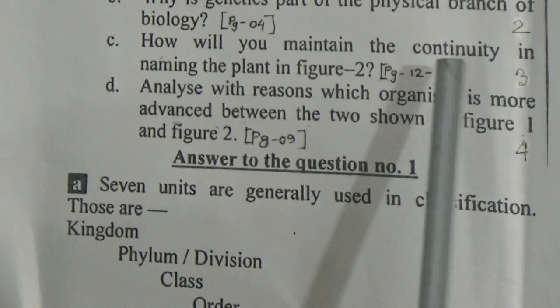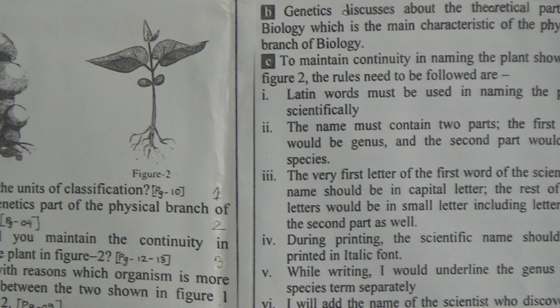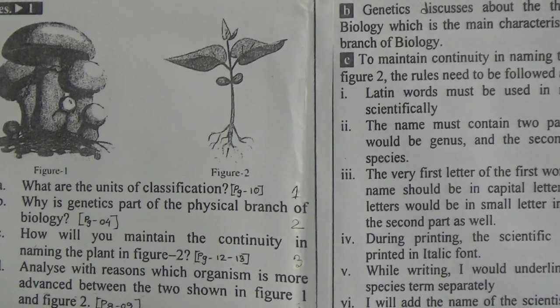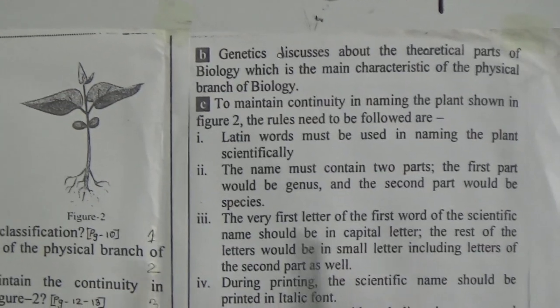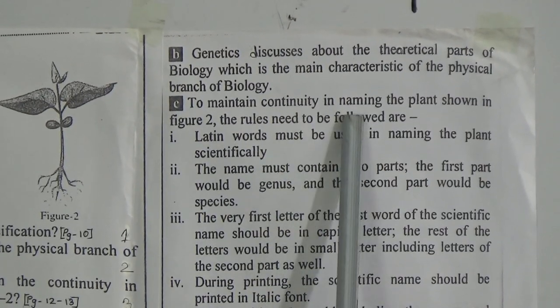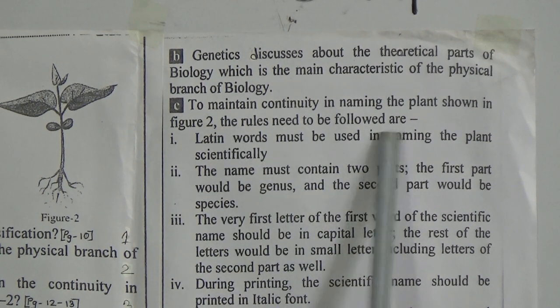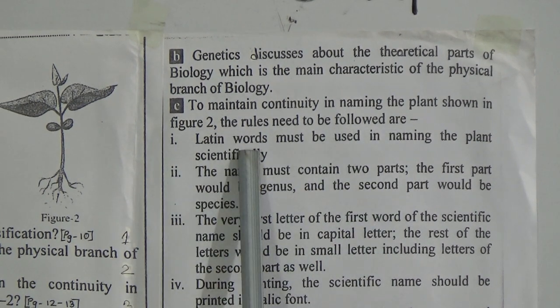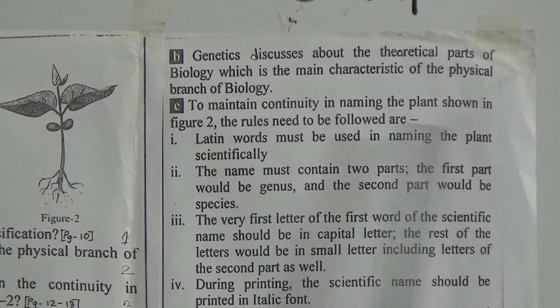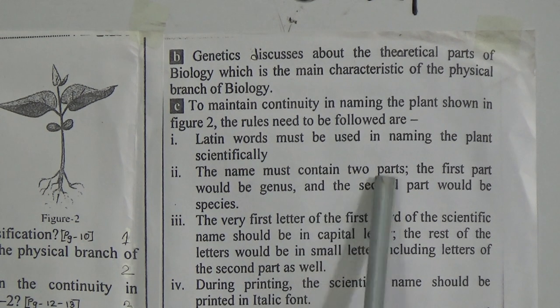Question (c): How will you maintain continuity in naming the plant in figure two? You will find this answer on page numbers 12 and 30. To maintain continuity in naming the plant shown in figure two, the following rules need to be followed: number one, Latin words must be used in naming the plant scientifically; number two, the name must contain two parts — the first part would be the genus and the second part would be the species.